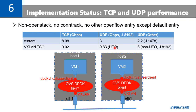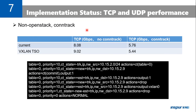Here we use UFO, so there is no UDP fragmentation. Even if we disable UFO, the UDP number is still good — it's 6 Gbps, which is 2 times the improvement. If we enable conntrack, we can see a big performance drop. Here are the OpenFlow rules for conntrack, so we think we need to optimize the conntrack implementation.